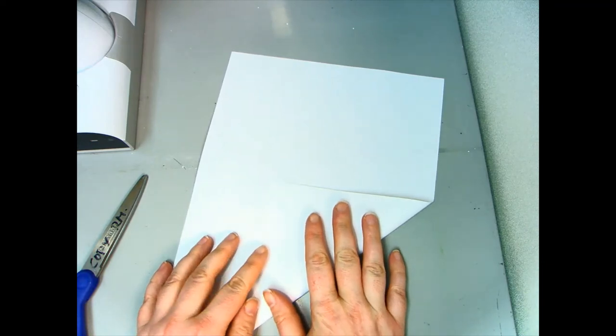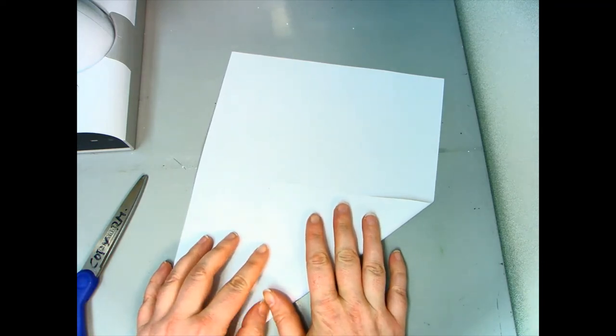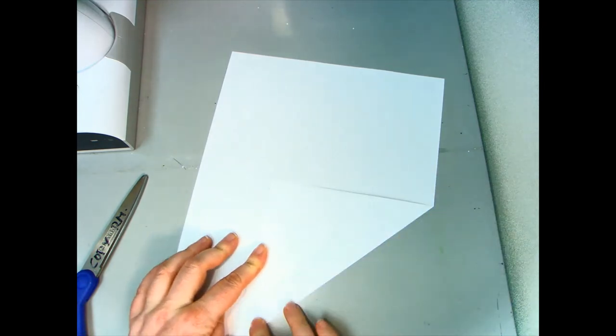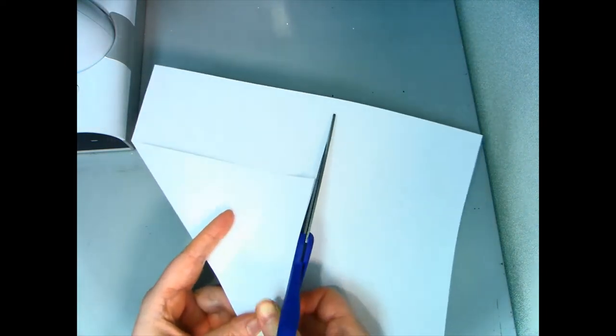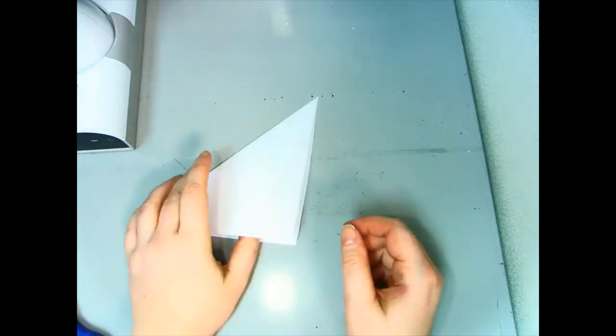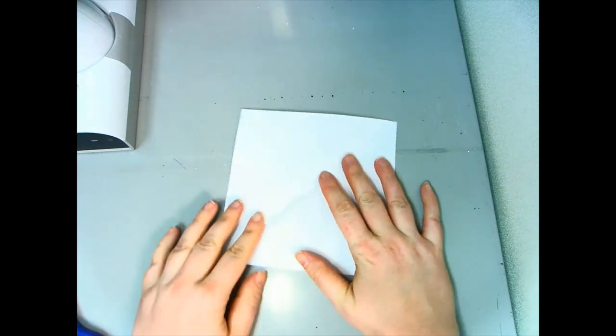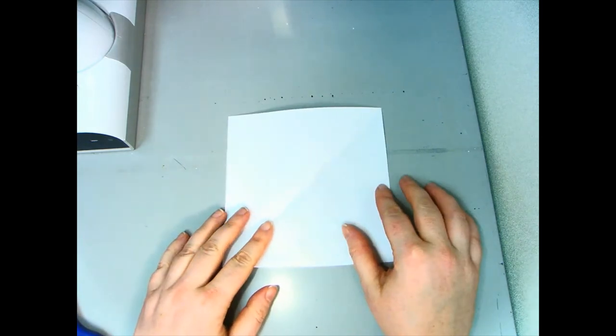The first thing I need to do is make a square. I like to do this by folding over one corner and then cutting out the shape. Now you can see I have a square. It's not perfectly square, but it's pretty close.